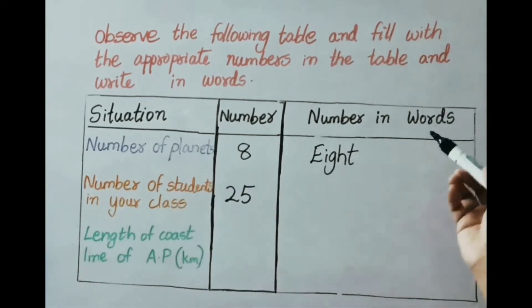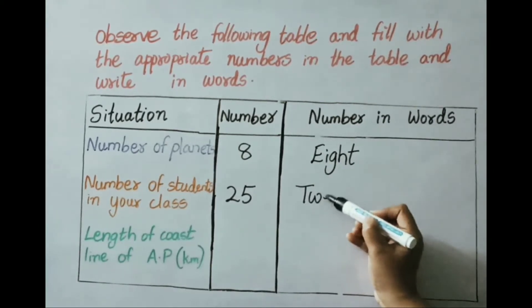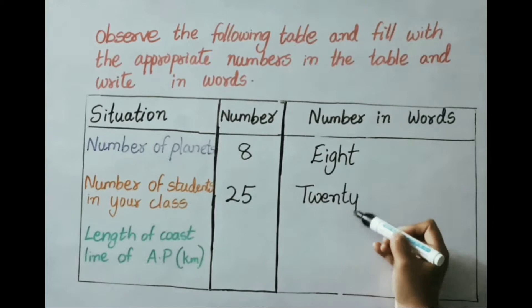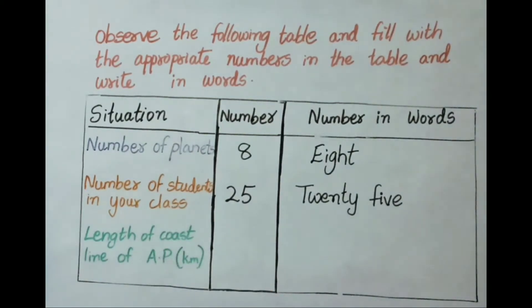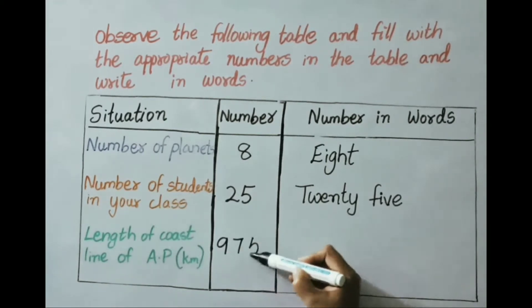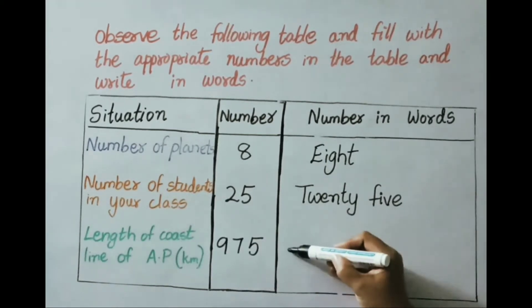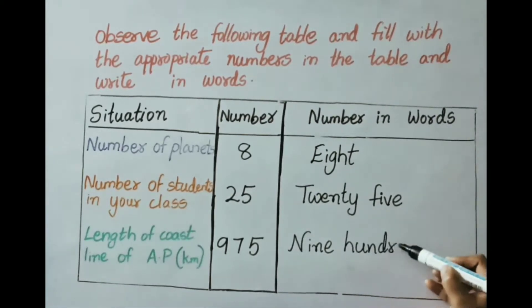Write down the number in words: 25 is twenty-five. See next one: length of coastline of Andhra Pradesh in kilometers, that is nine hundred seventy-five. Write the number in words: nine hundred and seventy-five.